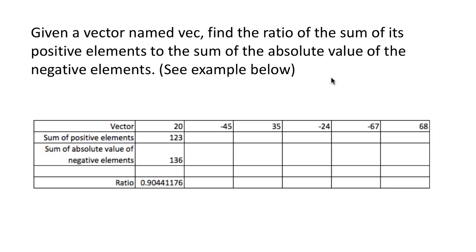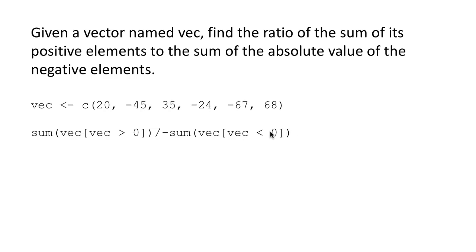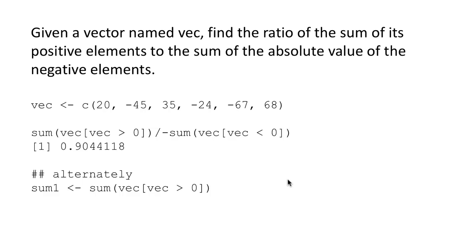This example is concocted to exercise our skills, but these kinds of computations can be applicable in real problem situations. It is easy to solve: first we want the sum of the positive elements — sum of vec[vec > 0]. Then the sum of the negative elements is sum of vec[vec < 0]. Since all those values are negative, the whole sum is negative, so to get the sum of absolute values we negate it. Step-by-step: sum1 is sum(vec[vec > 0]), sum2 is sum(vec[vec < 0]), and the ratio is sum1 divided by minus sum2.